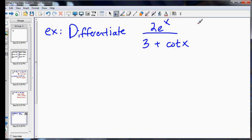So, first of all, the numerator is the f. The denominator is the g. f prime is just 2e^x, since the derivative of e^x is itself.